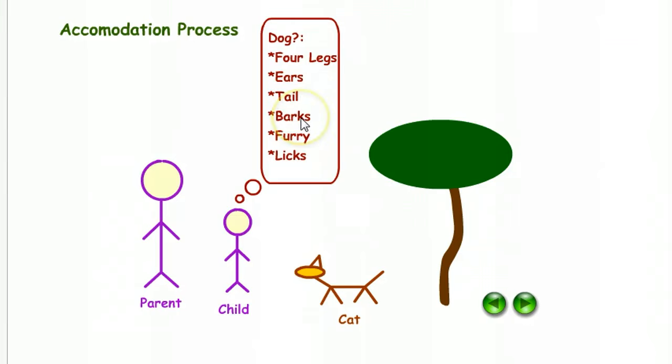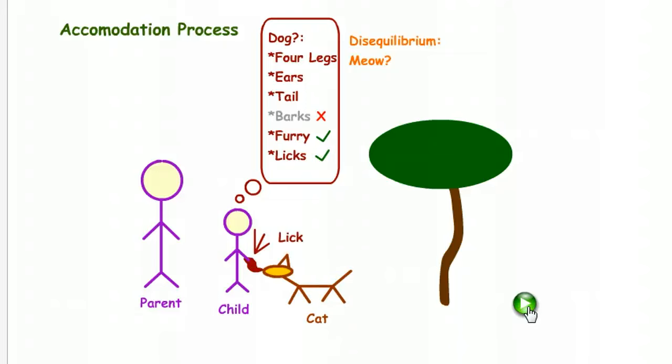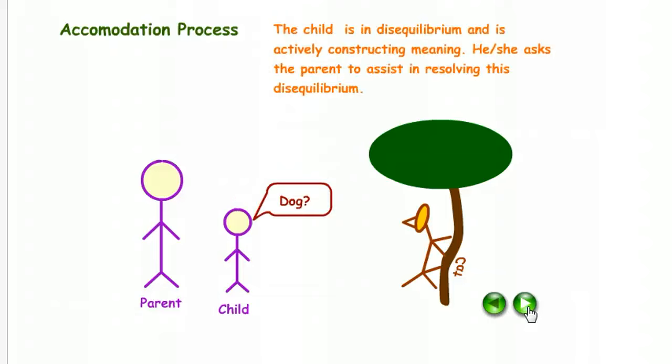Hasn't heard any barking, appears to be furry, hasn't licked. This animal goes meow. Now we're in a state of disequilibrium. The animal is furry. The animal does lick, but it meows. Now this animal is climbing up a tree. So the child is in disequilibrium and is actively constructing meaning. He or she asks the parent to assist this disequilibrium. Dog? Dog?